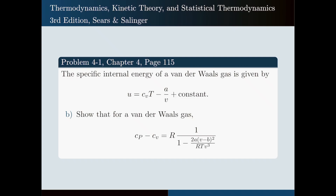Hello, in this video I am going to solve the following problem for you. The specific internal energy of a Van der Waals gas is given by U equals C_V times T minus A over V plus a constant. Show that for a Van der Waals gas, C_P minus C_V is obtained from this relation.